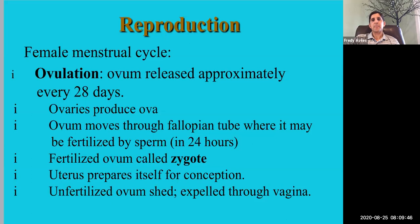When the ovum is released, it travels through the fallopian tube, attached to the uterus. It may be fertilized as it moves — usually within about 24 hours — by sperm, if you've had unprotected sex. When the ovum meets the sperm and becomes fertilized, you have what's called a zygote. The zygote has all 46 chromosomes — 23 pairs — half from the mother and half from the father.